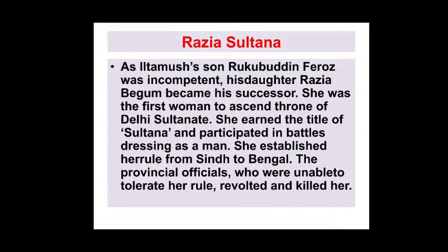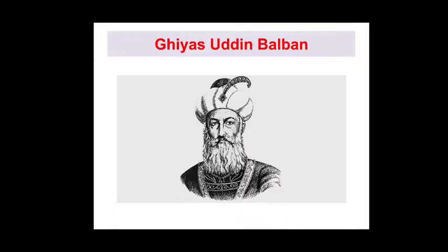The next ruler is Razia Sultan. Iltamash's son Ruknuddin Firoz was an incompetent ruler, so his daughter Razia Begum became his successor. She was the first woman to ascend the throne of the Delhi Sultanate. She earned the title of Sultana and participated in battles wearing male dress. She established her rule from Sindh to Bengal. However, provincial officials who could not tolerate her rule revolted and killed her.